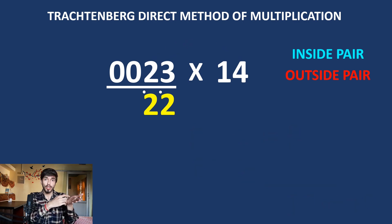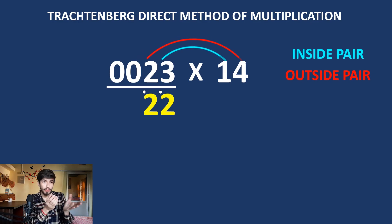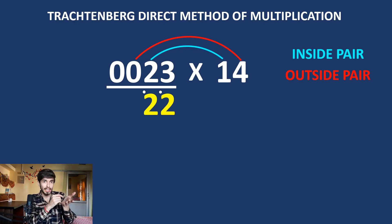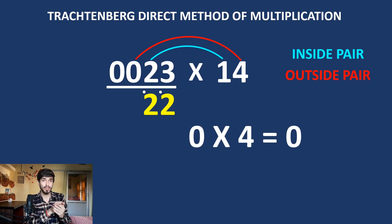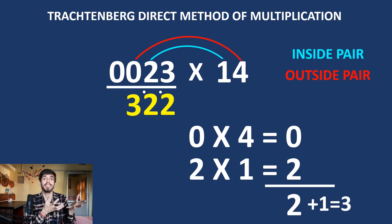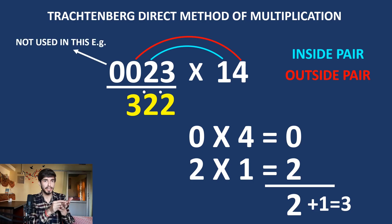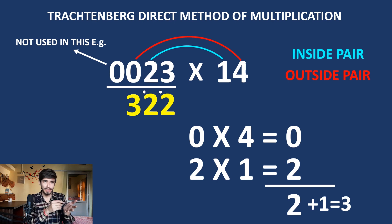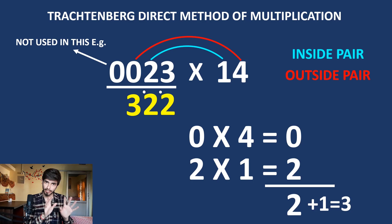Now we focus on the zero. Shift the arch — make the outside pair and inside pair again. Zero times 4 is 0, and 2 times 1 is 2, plus one carry makes 3. So our answer is 322. We didn't need that extra zero this time, but sometimes it is needed when there is an extra carry, and it is generally good practice to write it.